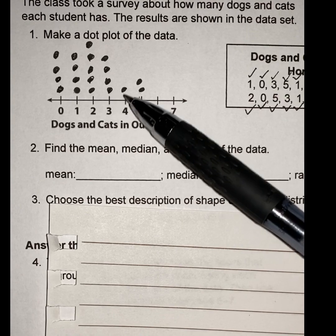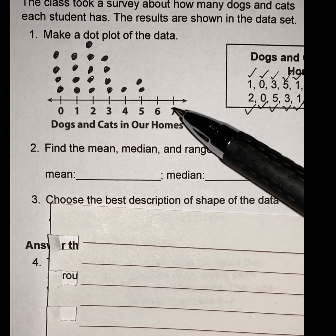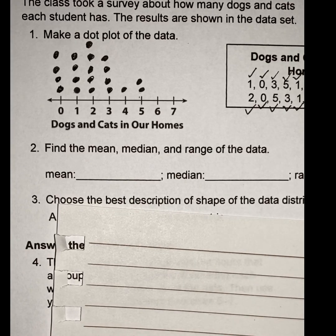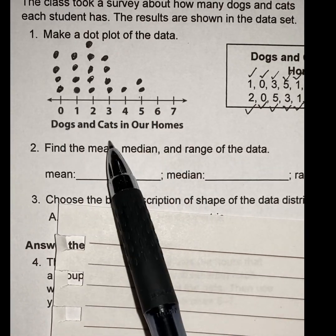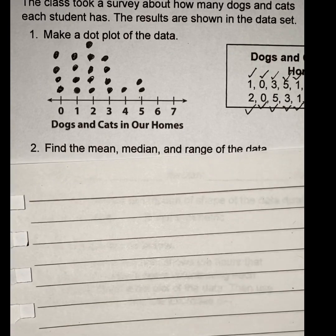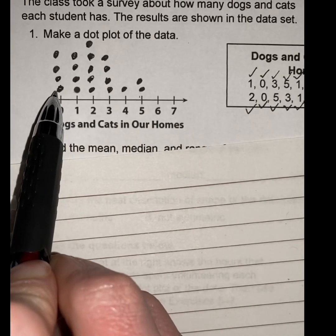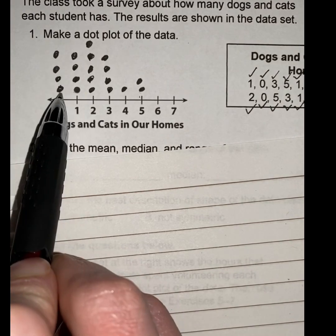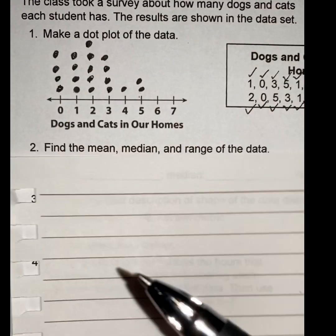Okay, so now I have a dot plot right here. What I need to do now is analyze the dot plot and find the mean, the median, and the range from this information. So in order to save some time, I'm going to count up how many zeros I have. So one, two, three, four. So four zeros is still gonna give me a value of zero right here.